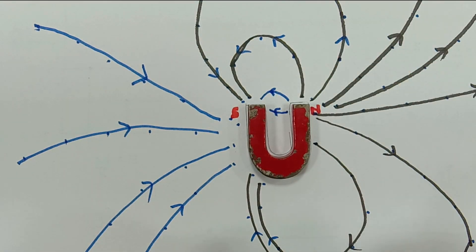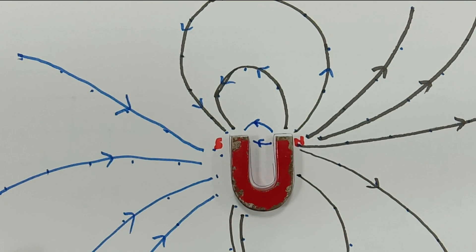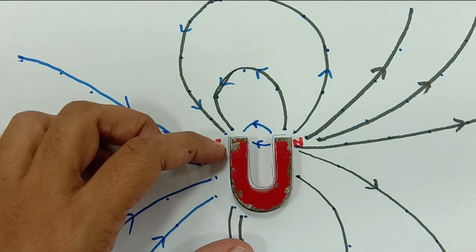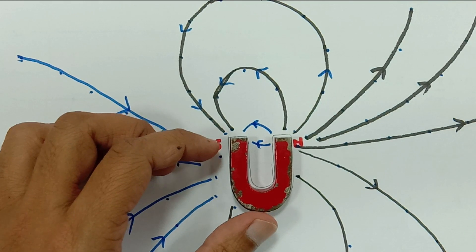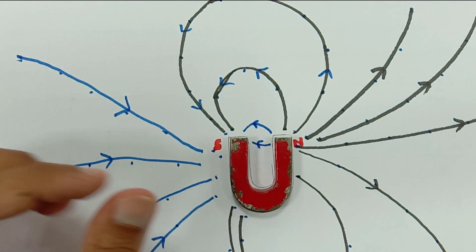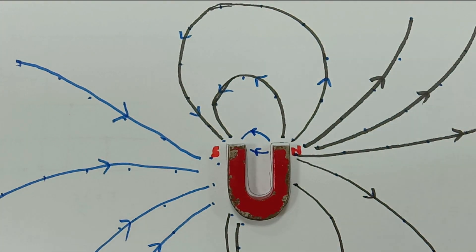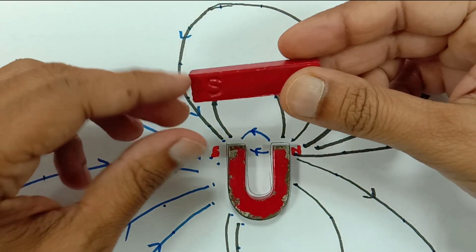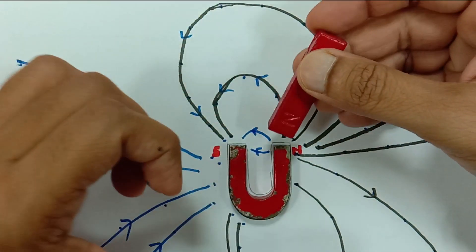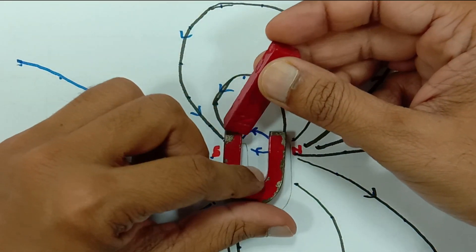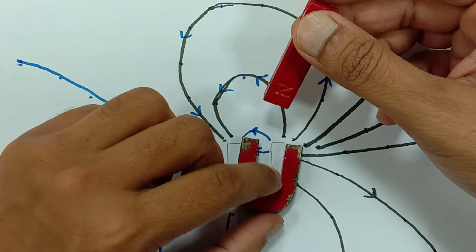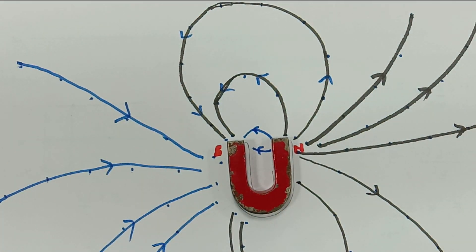So hopefully guys you have understood and from this experiment we can also learn that repulsion is the surest test for the magnetism and this is our bar magnet which proves that this is the north pole and this one is the south pole. Have fun guys and enjoy physics. Thank you for watching the video people.